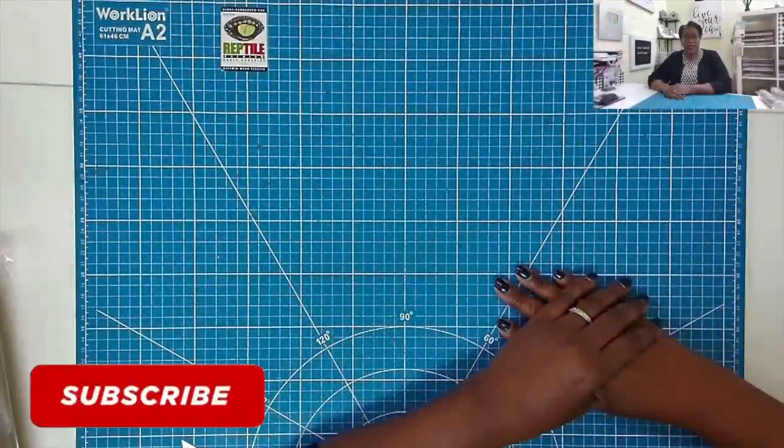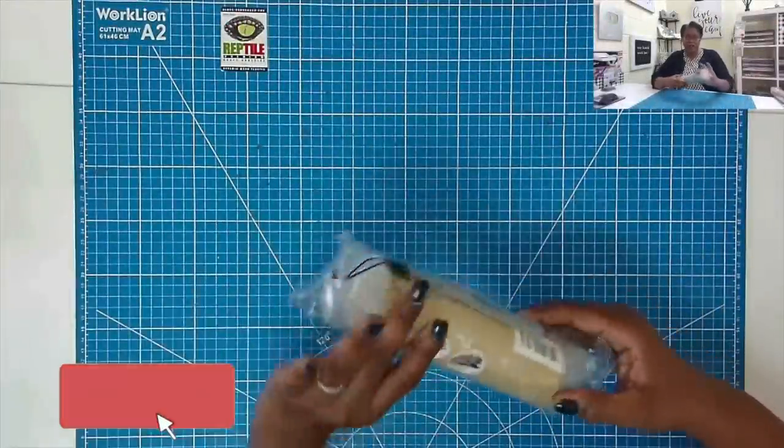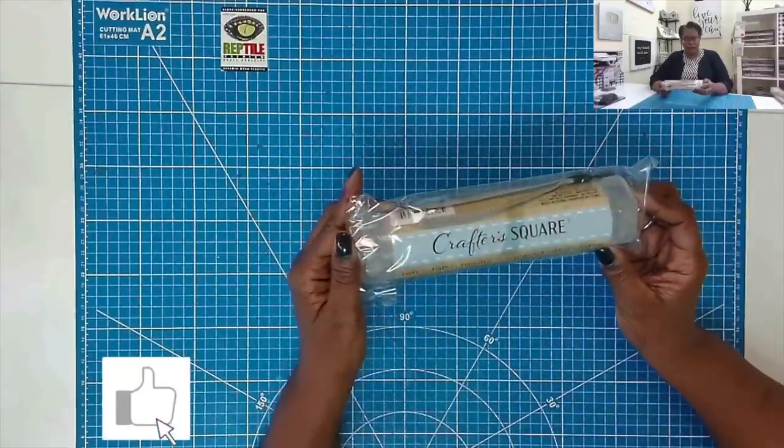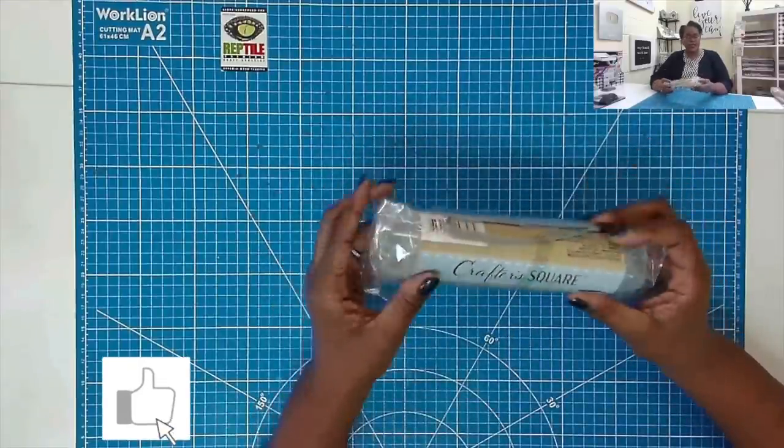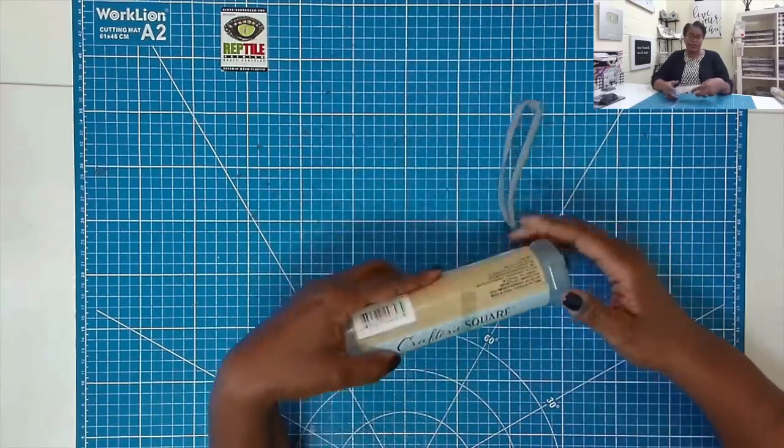Wasn't that pretty and you're not going to believe how easy it is. And it all started with this little Crafter's Square retractable holder. It's meant to be like a pencil holder, a paintbrush holder. But when I saw it, I knew that it met my need.